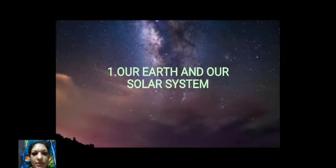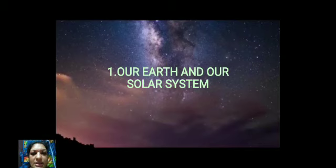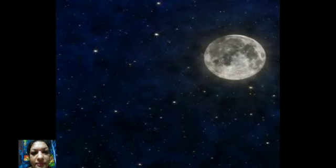Welcome students. This is our subject Environmental Science One, EVS1. Let us learn the first lesson: Our Earth and Our Solar System. In this picture, what can you see? It is a nighttime scene where you can see the moon and the stars — a clear night sky where the moon and stars are both visible.